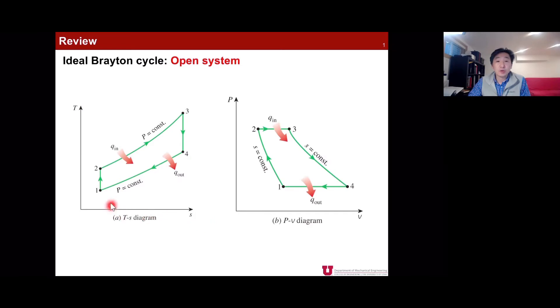The TS diagram goes through the process from 1 to 2, which is an isentropic compression process, and constant pressure heat addition process, and isentropic expansion process in the turbine, and 4 to 1 is the constant pressure heat rejection process. So these are four base processes of the ideal Brayton cycle.